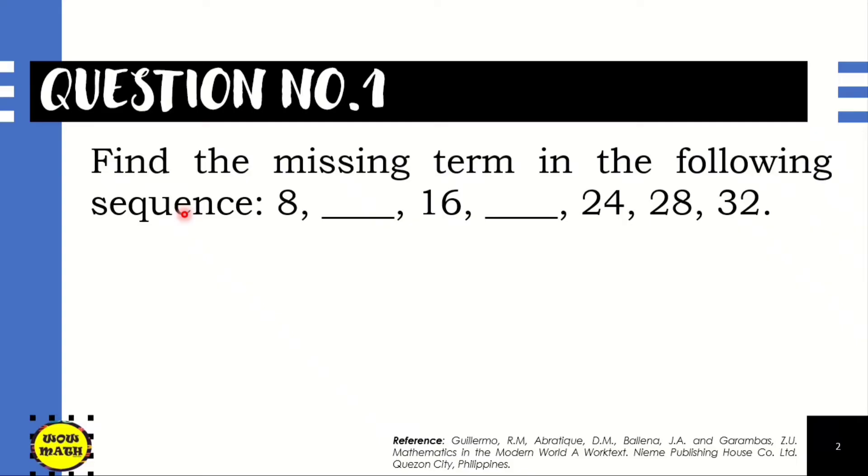Let's try the strategy of finding the next term by getting the difference between consecutive terms. For example, 24 and 28: 28 minus 24 equals 4. Then 32 minus 28, that is also 4.